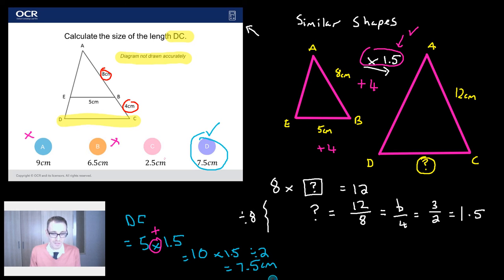2.5. Where the flipping heck does something like 2.5 come from? Well I reckon what they've done here is they've seen that to get from 8 to 4 you halve it. So to get to 5 to that they've halved it as well to get 2.5. But no no no no no no. Take it as separate shapes and you'll see that cannot be the right answer.